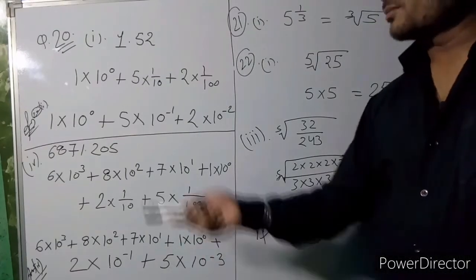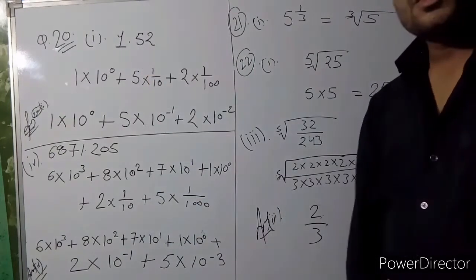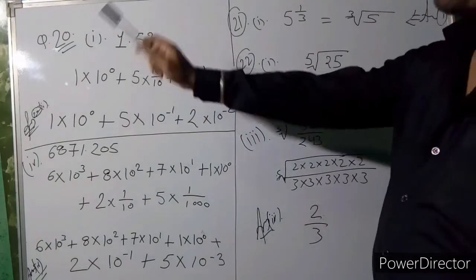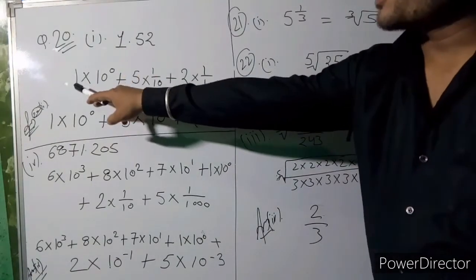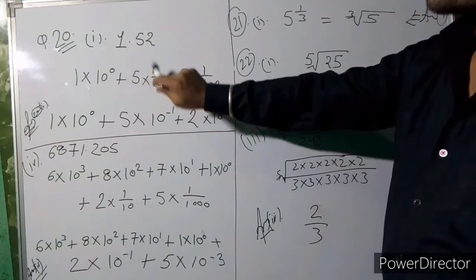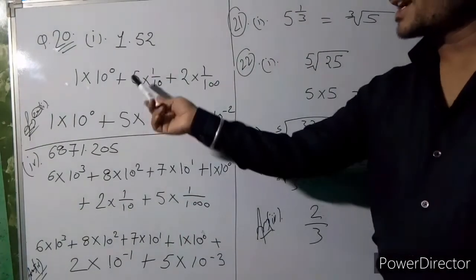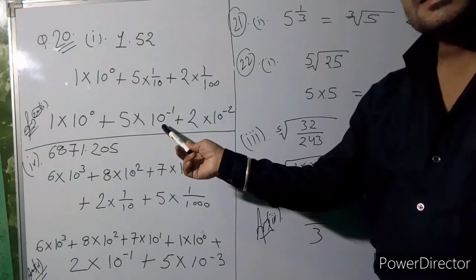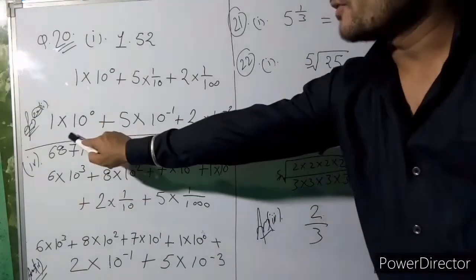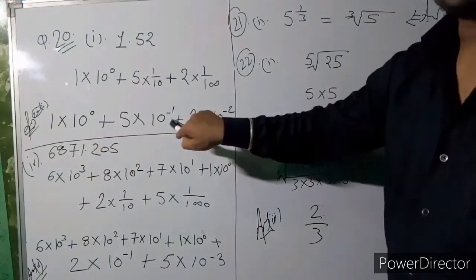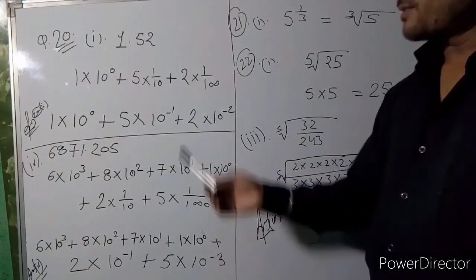Question 20: convert 1.52 into standard form. We write it as 1 × 10⁰ + 5 × 10⁻¹ + 2 × 10⁻². After the decimal point, digits represent tenths (10⁻¹) and hundredths (10⁻²). So the standard form is 1 × 10⁰ + 5 × 10⁻¹ + 2 × 10⁻².